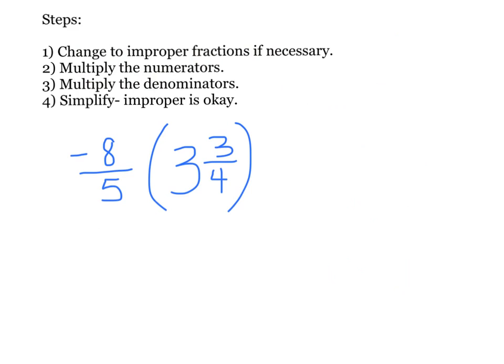Let's try another one. In this problem you'll see that two numbers are right next to each other. Remember, when you see two numbers right next to each other — or next to each other with parentheses — that means times. So I look at my first fraction: it's a normal fraction, I can leave it as negative 8 fifths.